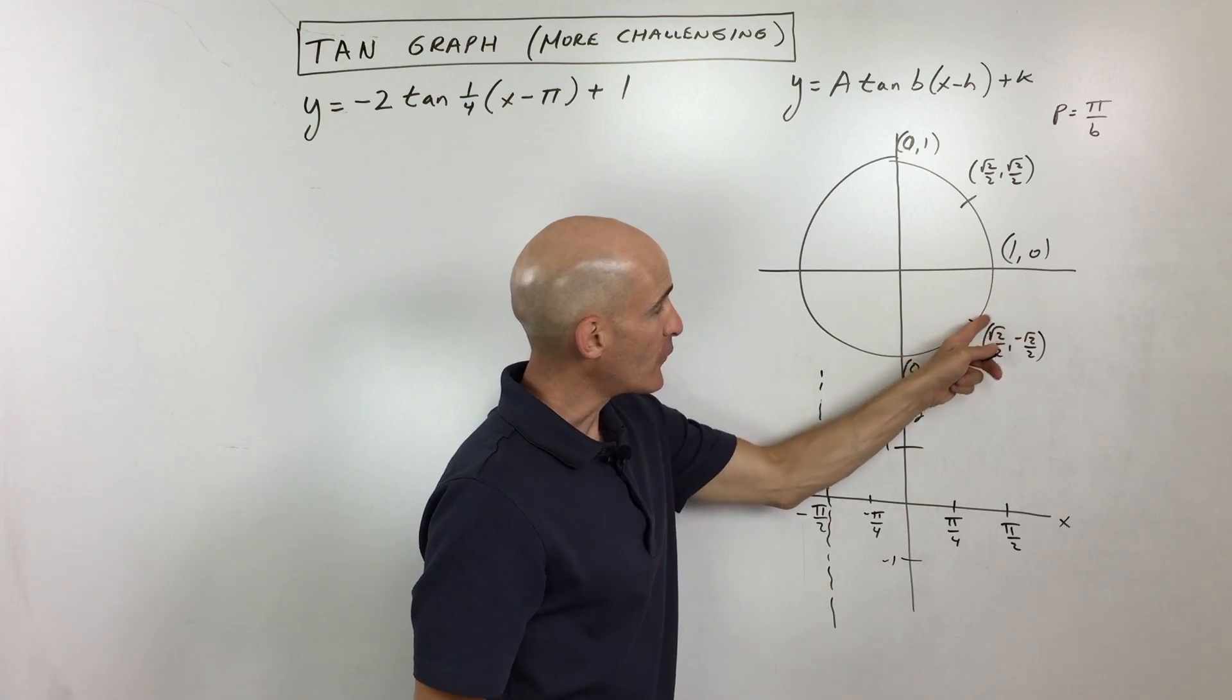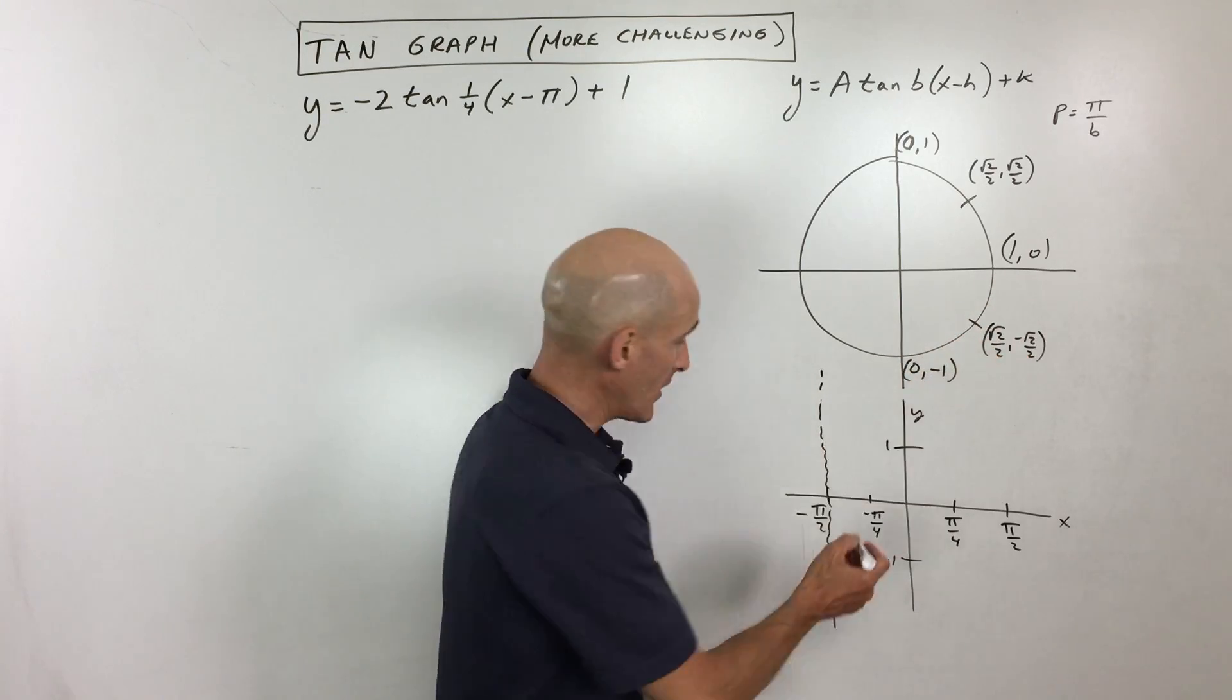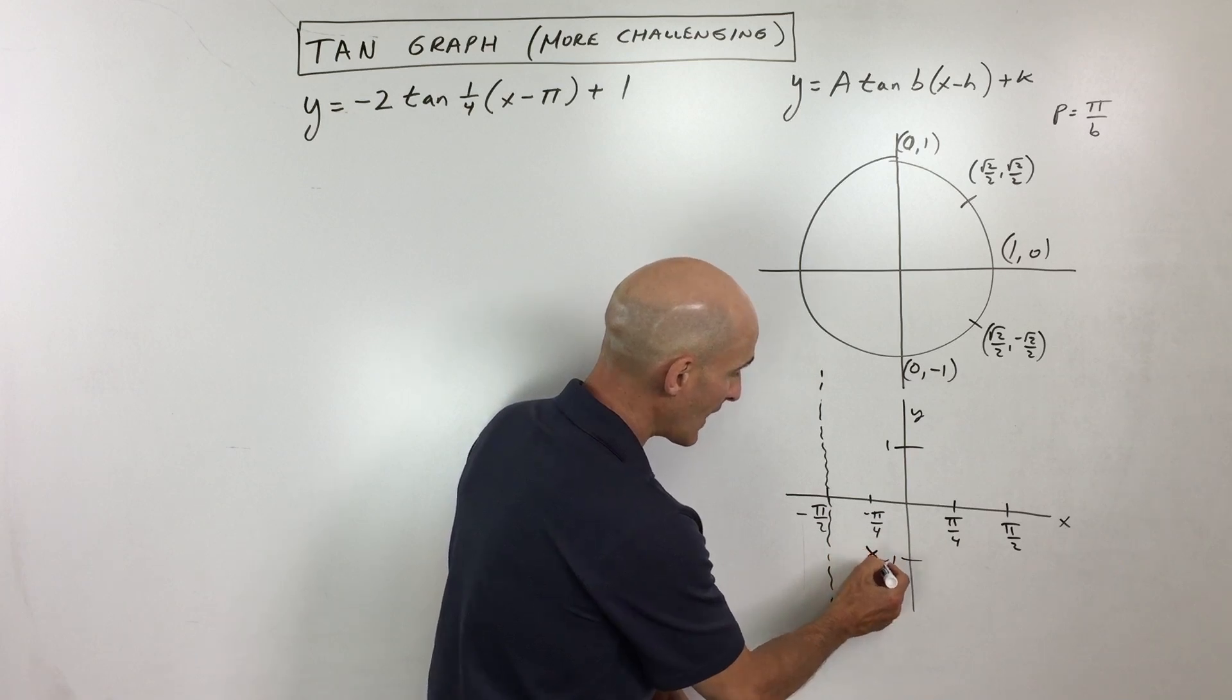At negative pi over 4, y divided by x gives us negative 1. So at negative pi over 4, we're down here at negative 1.